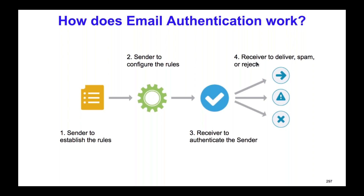Or it may flag it as spam for various reasons — if authentication fails, it may go directly to spam. Or it may just reject the email and not deliver it at all. So the outcomes are: it can deliver, flag as spam, or reject the email entirely.